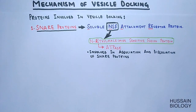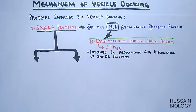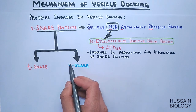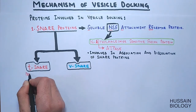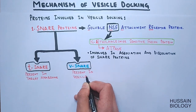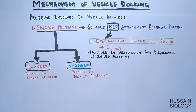NSF is involved more in dissociation than association of SNARE proteins. These SNARE proteins are categorized into two classes: T-SNARE and V-SNARE. T-SNARE, as the prefix suggests, is the SNARE protein present on the target membrane and will interact with vesicle SNARE proteins. V-SNARE is the SNARE protein present on the vesicle during transport, and it is this V-SNARE that will interact with T-SNARE to form a complex.